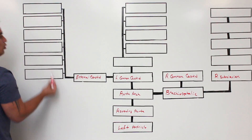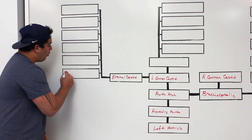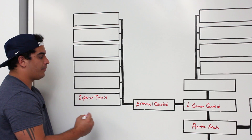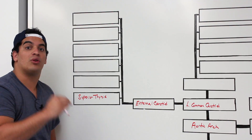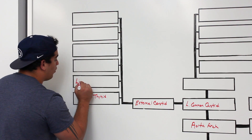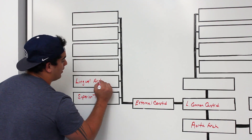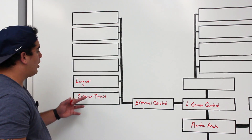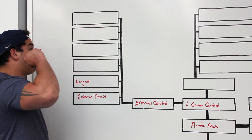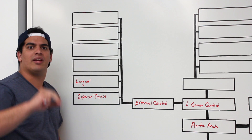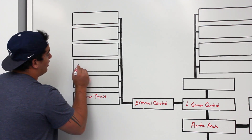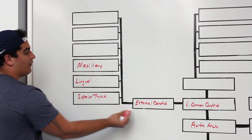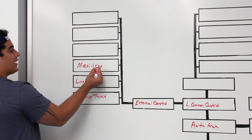From the external carotid artery, it moves upward and gives off multiple branches along the path. One branch is the superior thyroid artery, which supplies the thyroid gland. As it continues, it gives off the lingual artery supplying the tongue. Then it gives off the maxillary artery, which itself can give off three different branches supplying structures around the face.